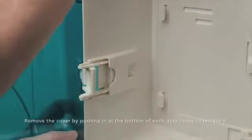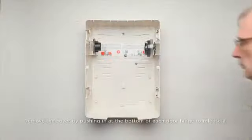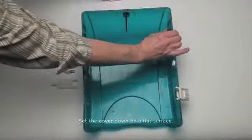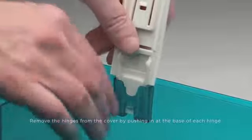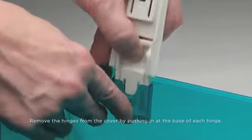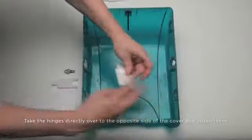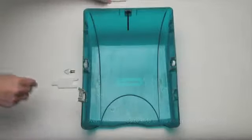Remove the cover by pushing in at the bottom of each door hinge to release it. Set the cover down on a flat surface. Remove the hinges from the cover by pushing in at the base of each hinge. Take the hinges directly over to the opposite side of the cover and install them.